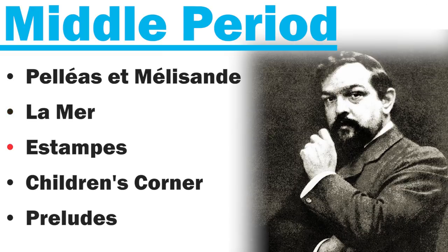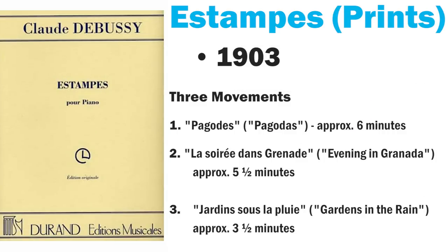My favorite compositions of Debussy's from his middle period are the piano ones. I love his Estampes collection written in 1903 — it's basically three movements that evoke various sounds and are very pictorial. He also composed Children's Corner and Preludes during this time, between 1908 and 1910. Let's first talk about the collection Estampes.